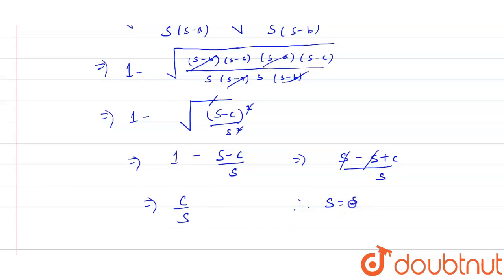s and s cancel out, we get c by s. Where s is the semi-perimeter, and the formula for s is equals to a plus b plus c, the addition of all three sides divided by 2.